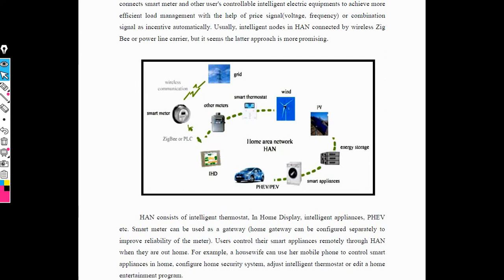Home area network also consists of smart meters, televisions, laptops, mobiles, air conditioners, and smart appliances such as washing machines. All these parameters can be controlled with the help of Wi-Fi. Wi-Fi is the best example of home area network. In the home, mobile phones can be used to control all smart appliances using a home security system through a Wi-Fi program that controls all parameters using Wi-Fi frequency.